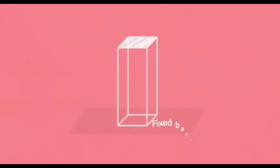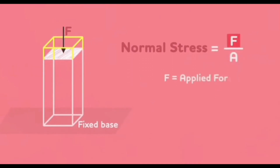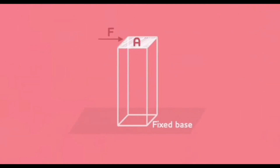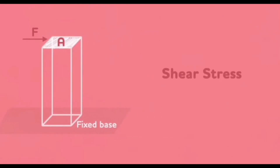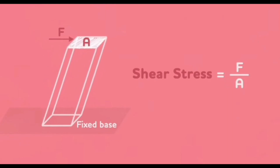Here is a beam, fixed at its base. If we apply a normal force to its cross-sectional area, the stress experienced will be normal stress, given by F over A, where F is the applied force and A is the cross-sectional area. If we then apply a force parallel to area A, the beam experiences shear stress. The formula for shear stress is the same — force per unit area — whether acting perpendicular or parallel. The deformation caused by the shear force stretches the object to some extent.